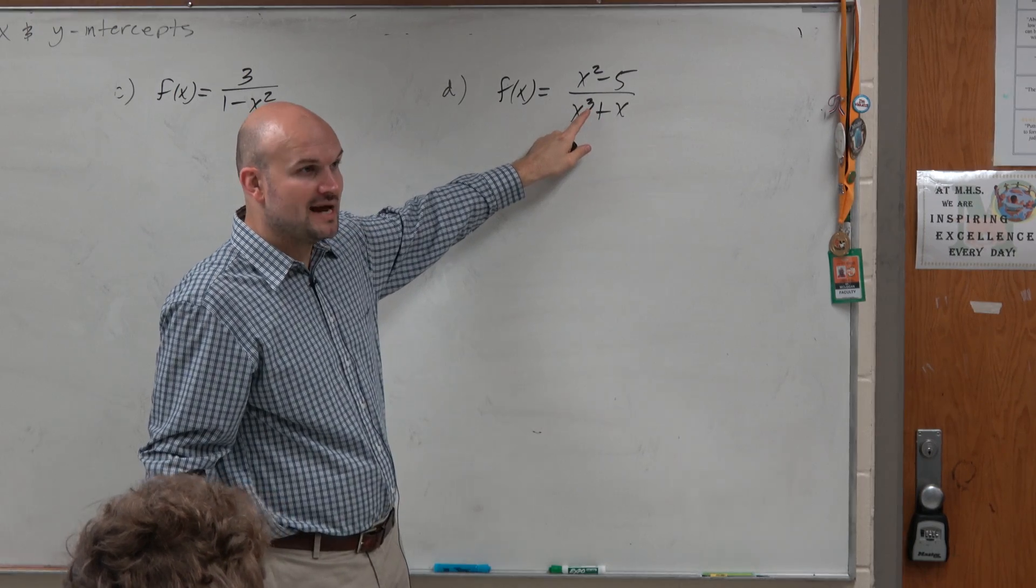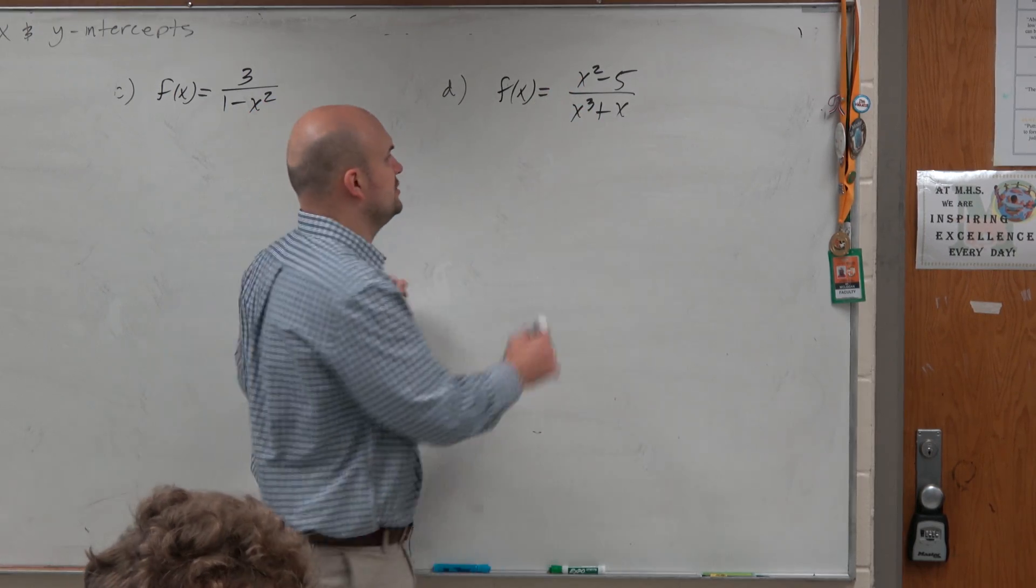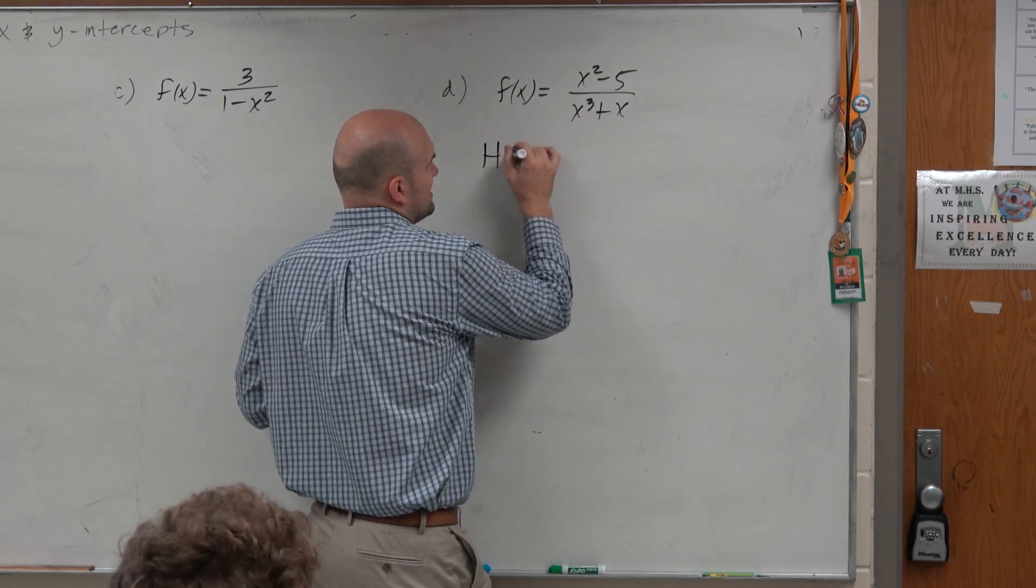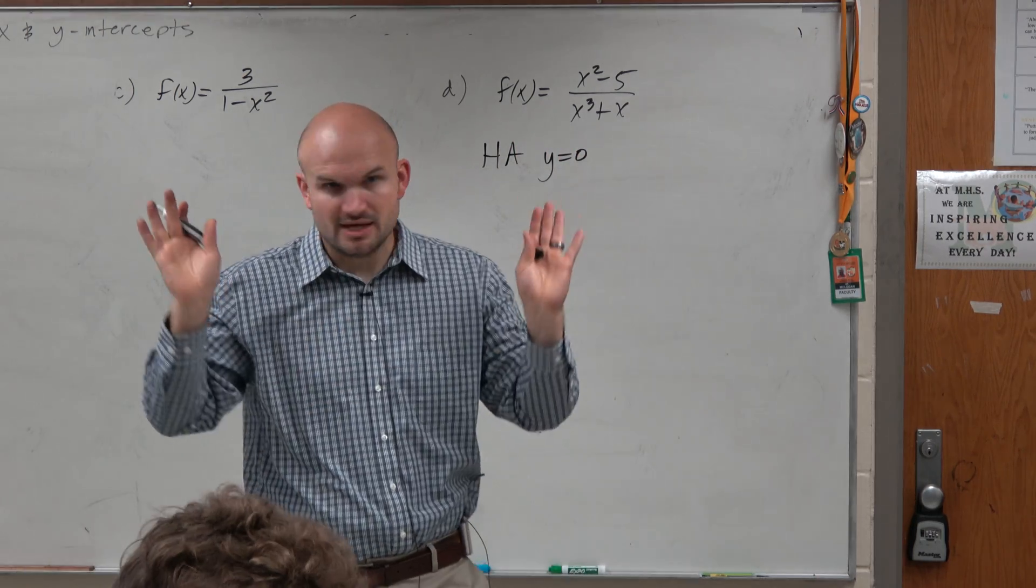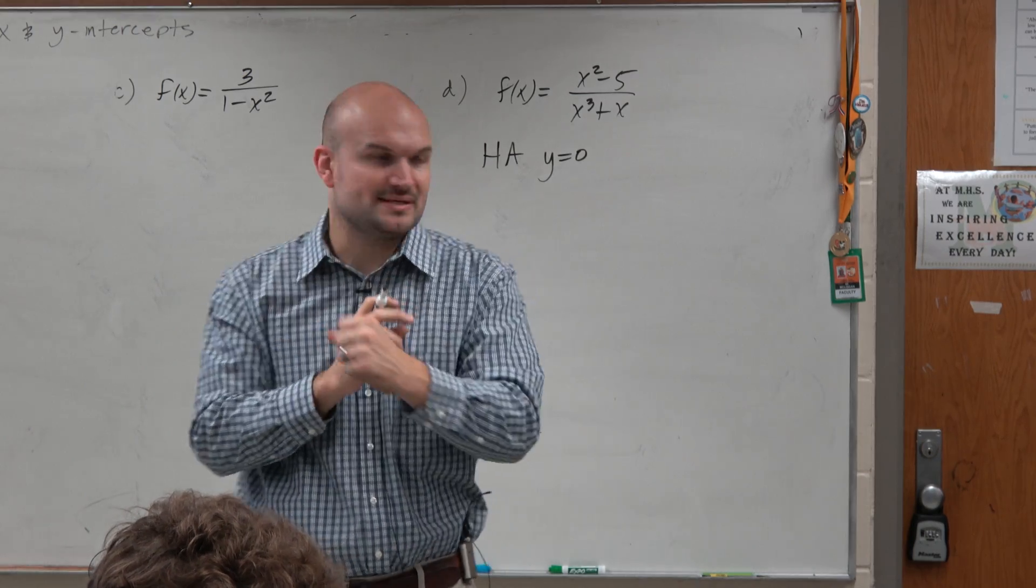We notice that the degree in the denominator is larger than the degree in the numerator. So based on the horizontal asymptote test, y is equal to 0. That's it. Done. Got that one. One point. Perfect.